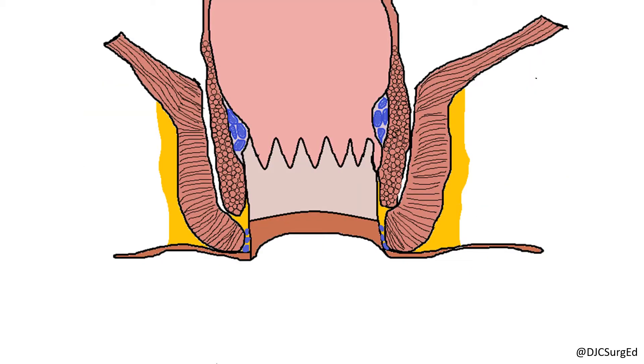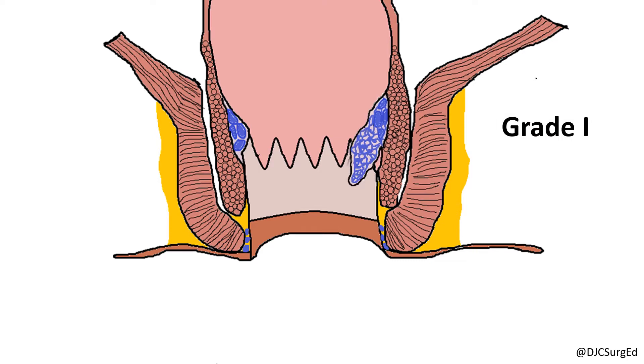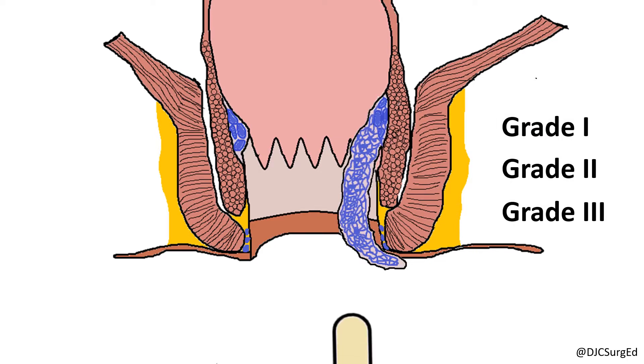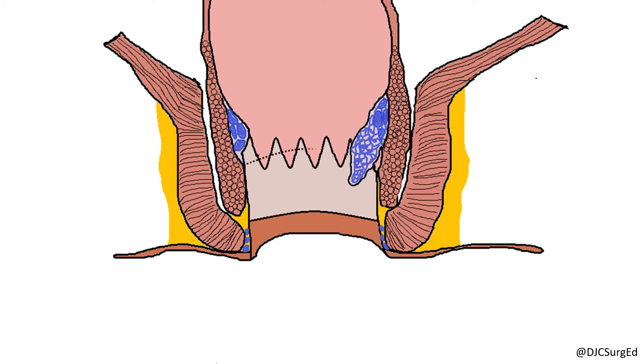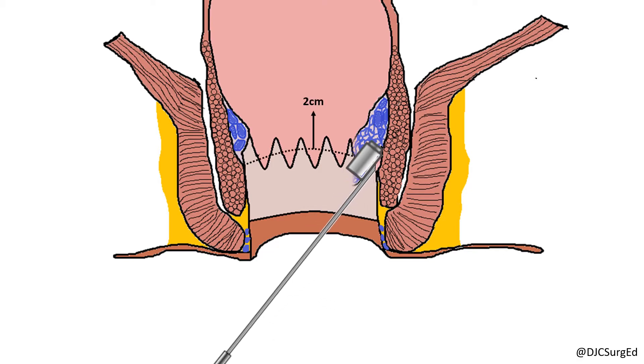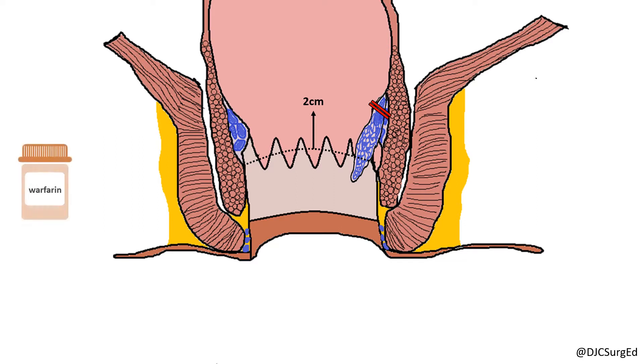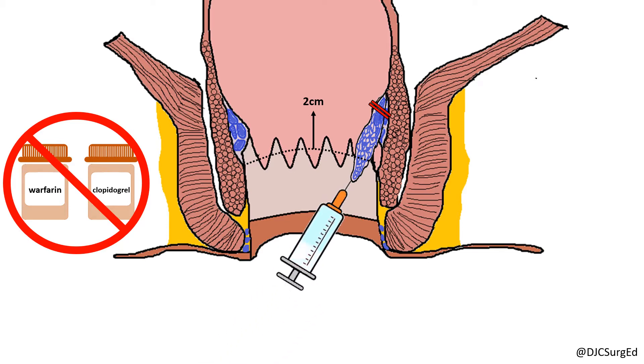Rubberband ligation is the most common office-based procedure for symptomatic internal hemorrhoids and can be performed for grade 1, 2, or 3 hemorrhoids. The rubberband is placed 2 centimeters above the dentate line, above the level of somatic pain innervation. Complications are usually minor, such as pain and minor bleeding, and because of the bleeding risk, rubberband ligation is typically avoided in patients on anticoagulants or antiplatelets, who are better candidates for sclerotherapy.